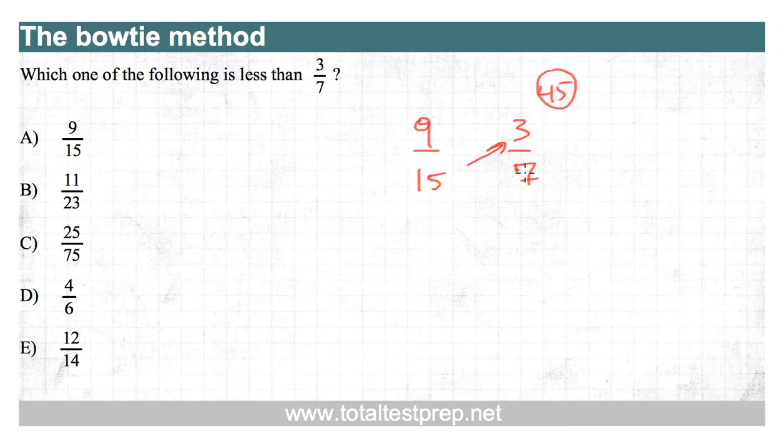Then we do the same thing for the denominator on the right and multiply that times the numerator on the left. This is why it's called the bowtie, because it sort of looks like a bowtie when you draw these arrows. Seven times nine is 63. And again, you put that product above the numerator. And then you compare the products.